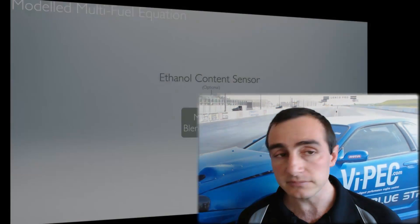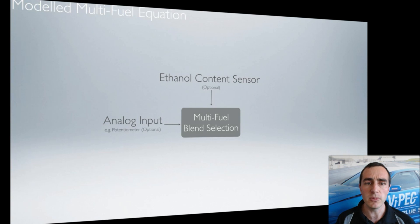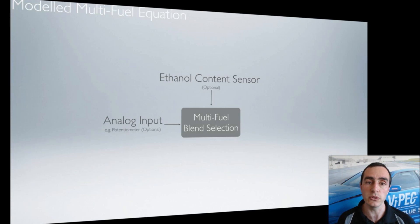The ethanol content sensor also tells the ECU the current fuel temperature, which can be taken into consideration when working out the correct amount of fueling to apply. The next option is an analog input — you can connect up something like a variable potentiometer to an analog volt channel on the ECU. You might set fully clockwise to fully petrol and fully anti-clockwise to fully ethanol, then adjust the potentiometer to match the current blend of fuel you're running.